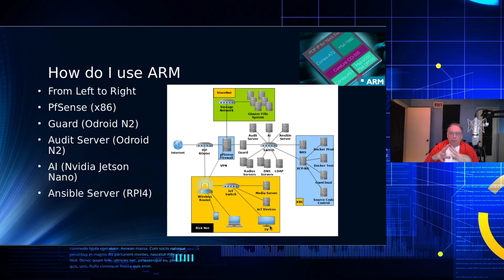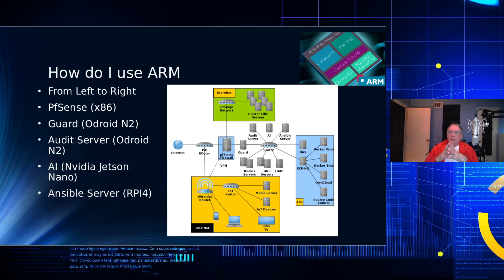The server types I actually use: the PFSense firewall is x86. There are ARM versions of PFSense; however, I need more network connections than those boxes provide. You can have multiple network connections on a single network using VLANs, but I don't really like that solution. VLANs are not good isolators of network traffic — there are ways to break them and get access to a network through a VLAN, so I prefer not to do that.